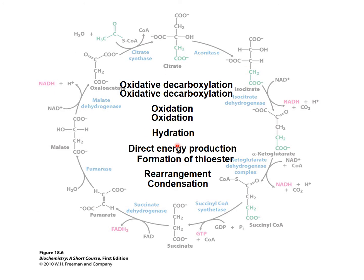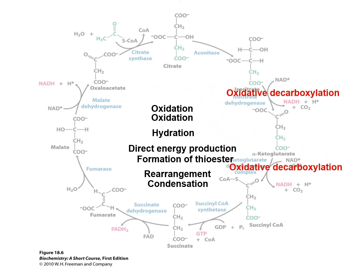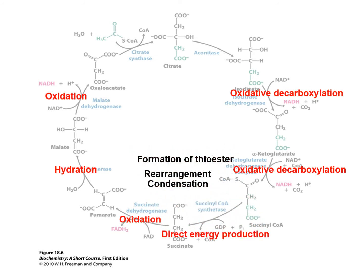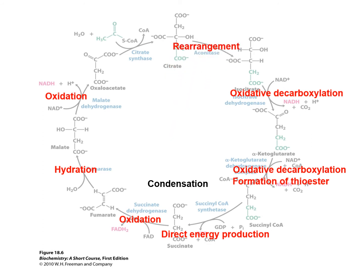To link the chemical reactions to the respective steps in the Krebs cycle: there are two steps of oxidative decarboxylation producing carbon dioxide and NADH; two oxidation events producing 1 FADH2 and another NADH; a hydration step producing malate from fumarate; a direct energy production yielding GDP; formation of a thioester bond adding coenzyme A to alpha-ketoglutarate to form succinyl coenzyme A; rearrangement of citrate into isocitrate increasing reactivity; and condensation combining the 2-carbon acetyl coenzyme A with the 4-carbon oxaloacetate to produce the 6-carbon citrate.